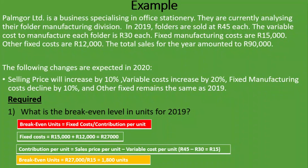What does that mean? It means that if we sell 1,800 units, we will have a net profit of zero — we will neither be making a loss nor making a profit. And that is what the break-even units mean. So we've just done the first requirement.